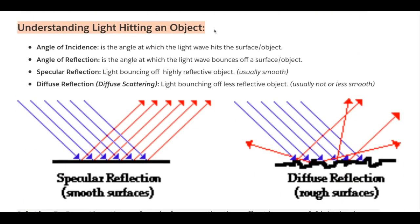Now let's look at what happens to light hitting an object. The angle of incidence is the angle at which the light wave hits the surface or object. The angle of reflection is the angle at which the light wave bounces off an object. The angle of incidence is shown in purple.